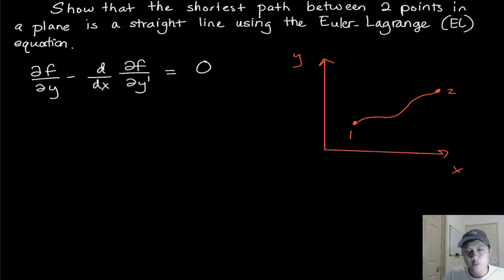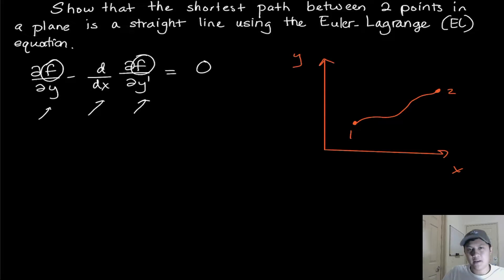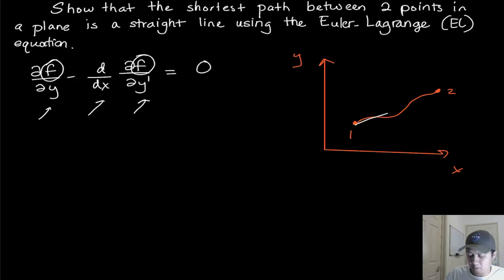But how do we actually prove that? Well, the Euler-Lagrange equation gives us a method to verify that ourselves. So what we're going to do here is we have to find a way to represent this function F in terms of all the variables. The F that we're trying to find is the F that minimizes the length between these two points.